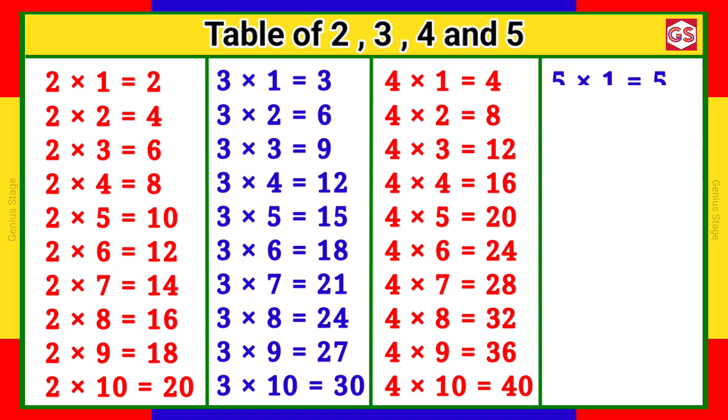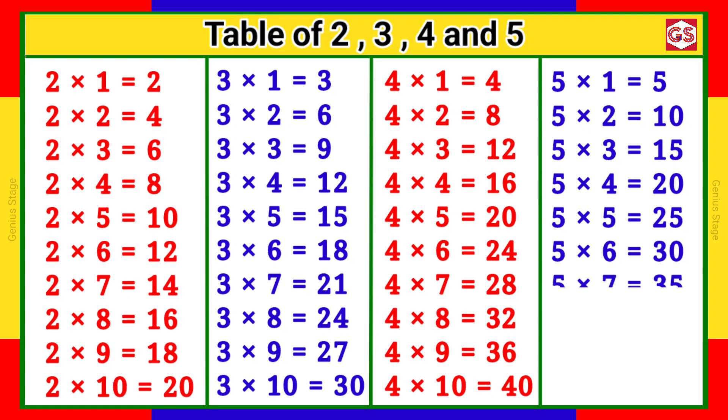5 1s are 5, 5 2s are 10, 5 3s are 15, 5 4s are 20, 5 5s are 25, 5 6s are 30, 5 7s are 35, 5 8s are 40, 5 9s are 45, 5 10s are 50.